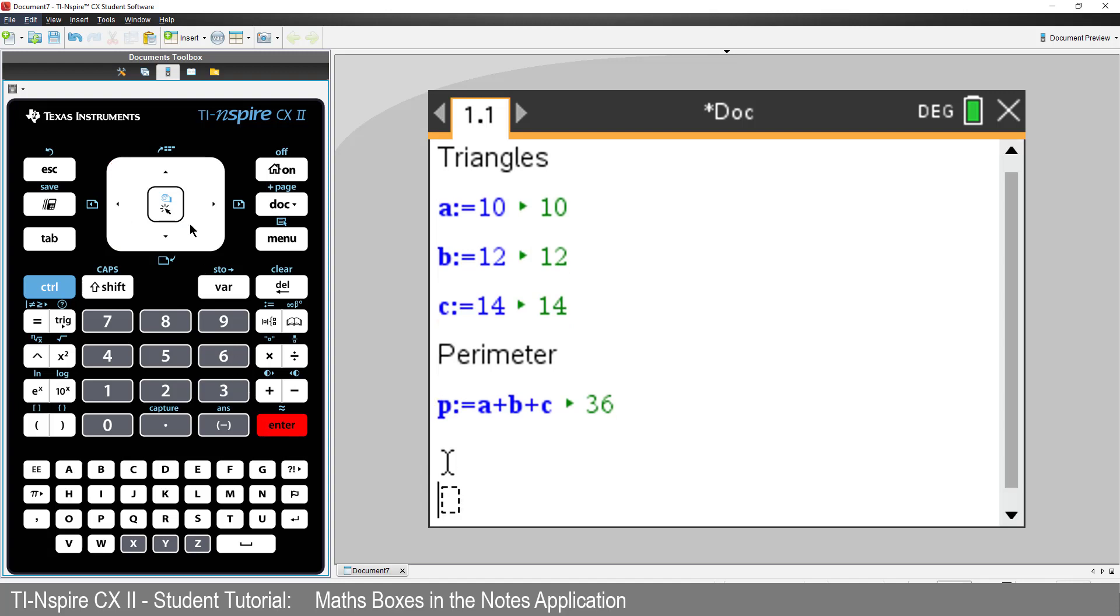What about the triangle's area? Outside the maths box, type area. And inside a maths box, use Heron's formula. Now, I haven't stored the semi-perimeter.